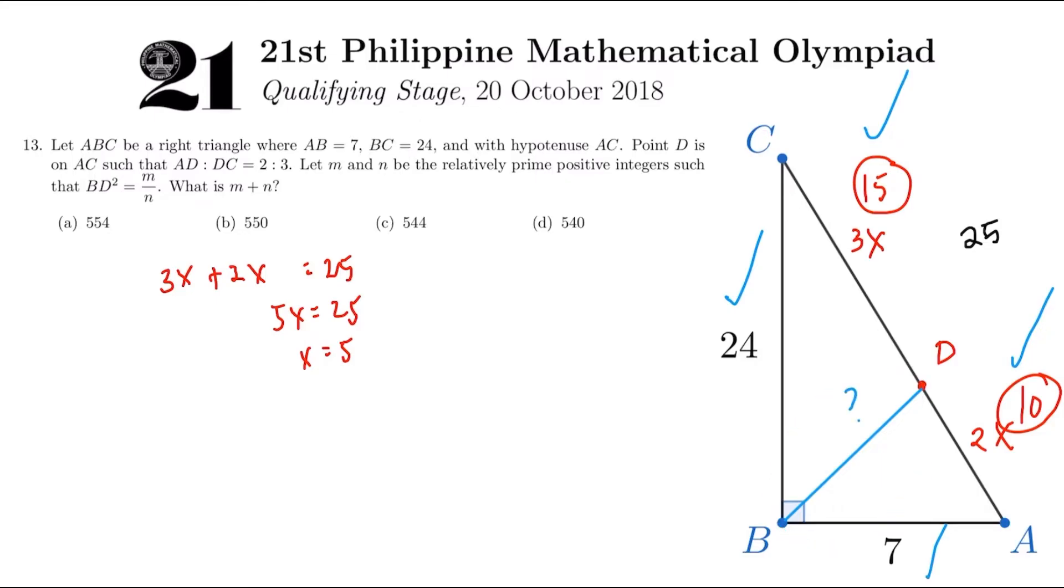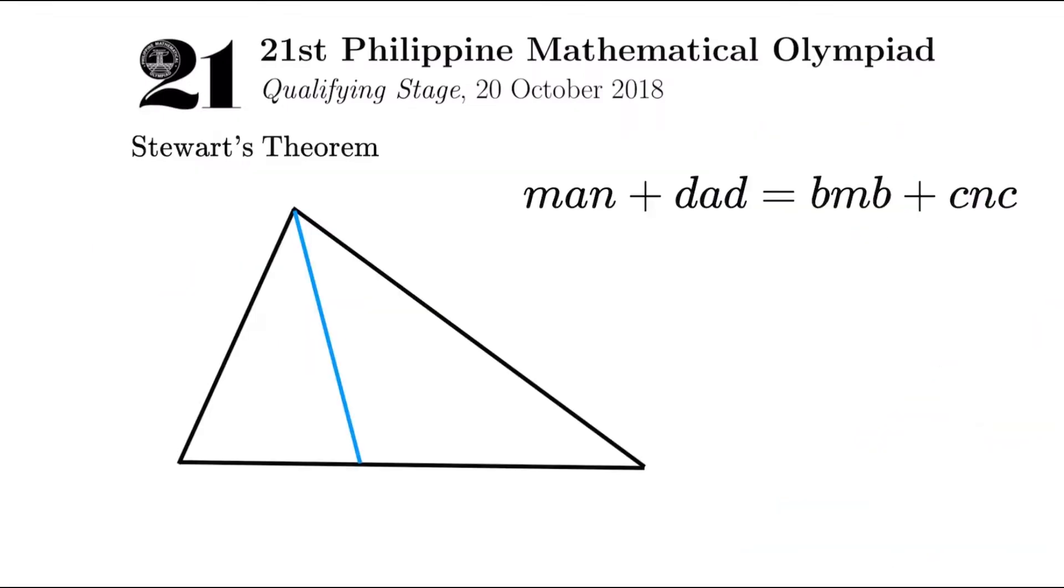When you have this kind of setup, and you know many lengths, in this case, BD is the only one we don't know because that's what we need to find. It is the direct application of a well-known theorem called Stewart's theorem. Let's go back to our figure later. For now, let's try to talk about Stewart's theorem. Now, here is the formula of Stewart's theorem. I wrote it like this: man plus dad is equal to BMB plus CNC. Now BMB, I like to think of it as a bomb. And then CNC, let's put it as a sink, a kitchen sink. So a man and his dad puts a bomb in the sink or something like that. Easy to remember.